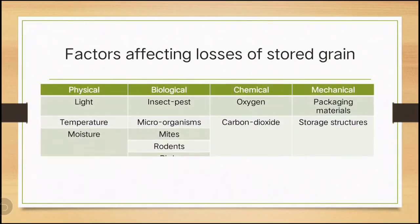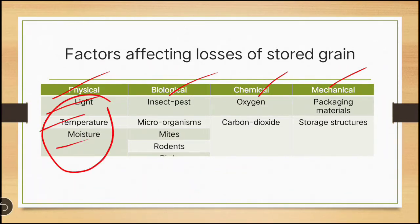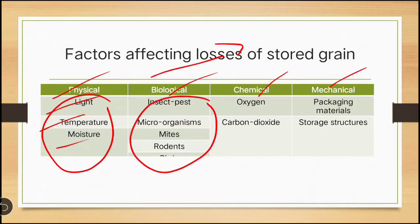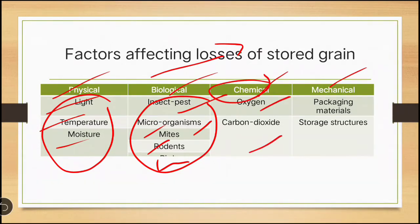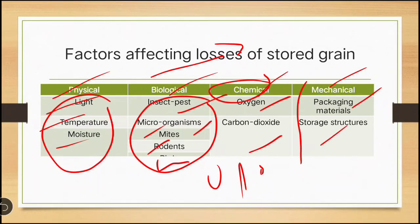There are four factors affecting stored grain losses: physical, biological, chemical, and mechanical. Under the physical factor, light, temperature, and moisture are included. Under biological, insect pests, microorganisms, mites, rodents, and birds come. Chemical factors include the percentage of oxygen and carbon dioxide, which are also responsible for losses in stored grain. Mechanical factors include packaging and storage structure, which also lead to losses. We will discuss these one by one.